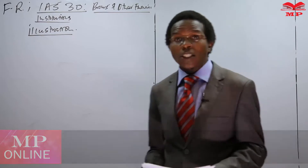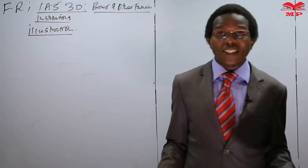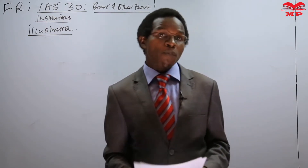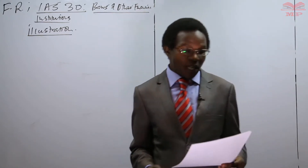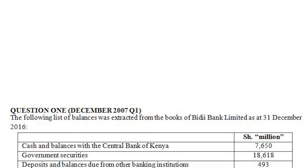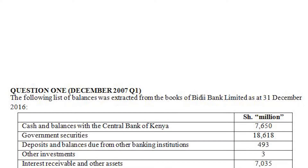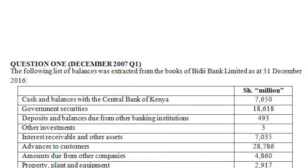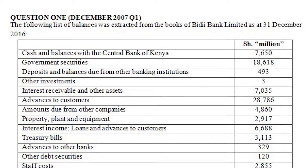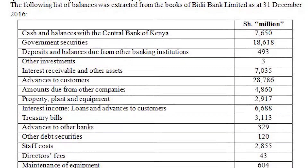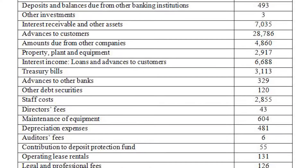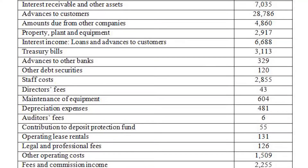The following list of balances was extracted from the books of BD Bank Limited as of 31 December 2016. We have cash and balances with Central Bank of Kenya, government securities, deposits and balances due from other banking institutions, other investments, interest receivable, other assets, advances to customers, amounts due from other companies, and property, plant and equipment.